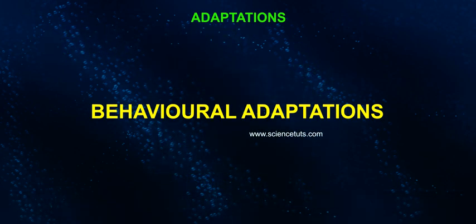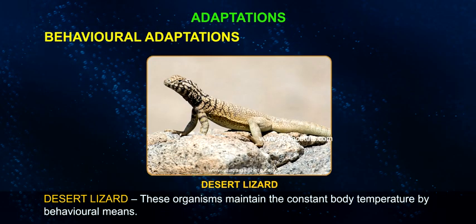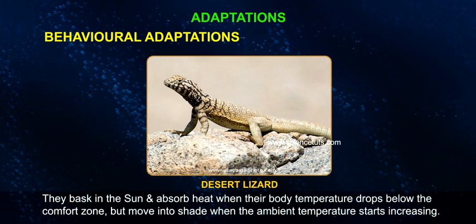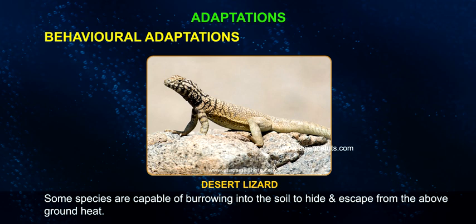Behavioral Adaptations: Some organisms show behavioral responses to cope with variations in their environment. Desert lizards maintain a constant body temperature by behavioral means — they bask in the sun and absorb heat when their body temperature drops below the comfort zone, but move into shade when the ambient temperature starts increasing. Some species are capable of burrowing into the soil to hide and escape from above-ground heat.